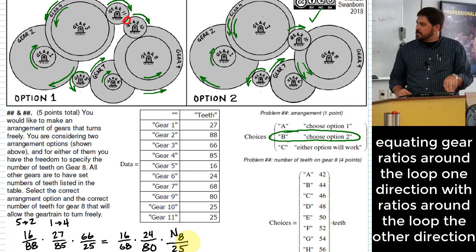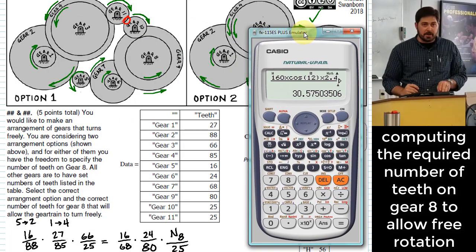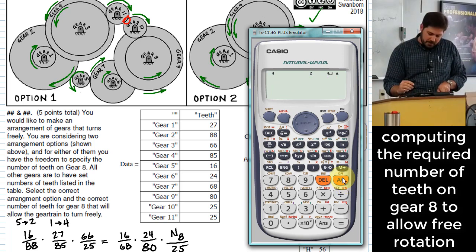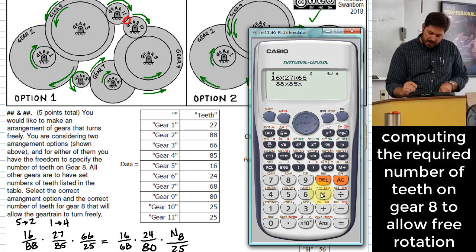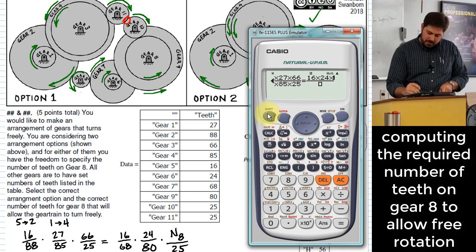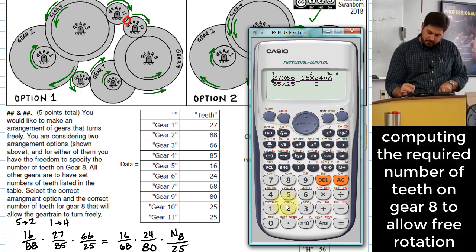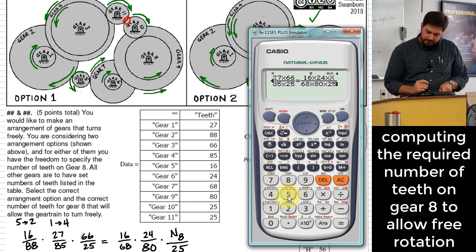And that's just an equation we can solve for the number of teeth. And hopefully we come up with an integer number. Hopefully the instructor that wrote this problem was thinking about that and made sure that it came out as an integer. Because it's possible to set up a problem like this where it doesn't turn out as an integer. And that would make it not turn out right. So here I've got basically all of my ratios on one side. I'm going to set that equal to all of my ratios on the other side. So 16 times 24 times, and here I'll just put x. And in the denominator I'll put 68 times 80 times 25.